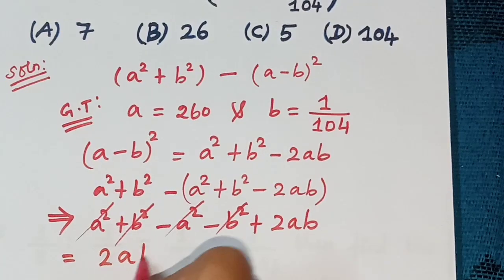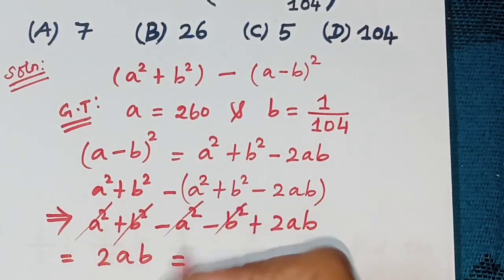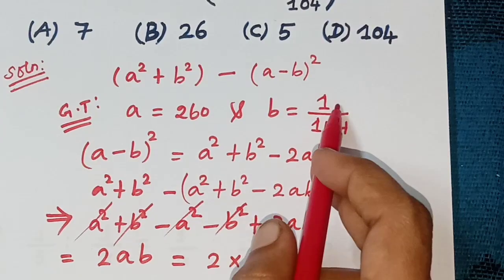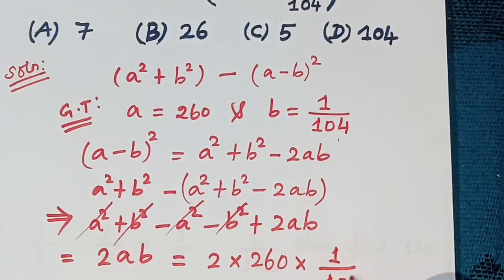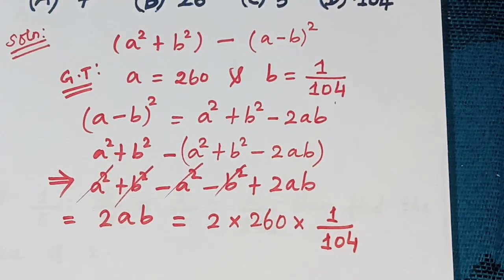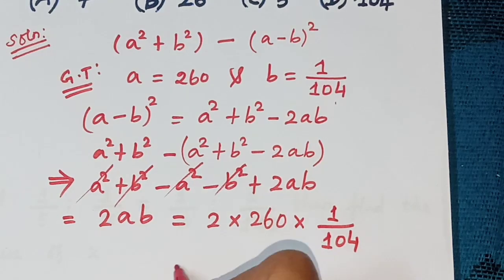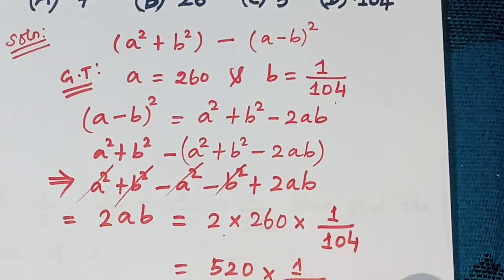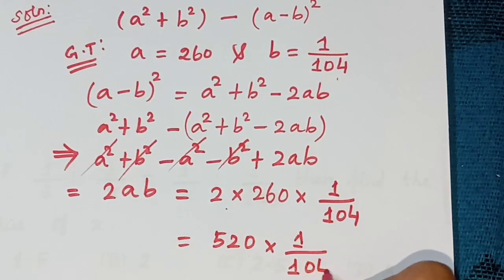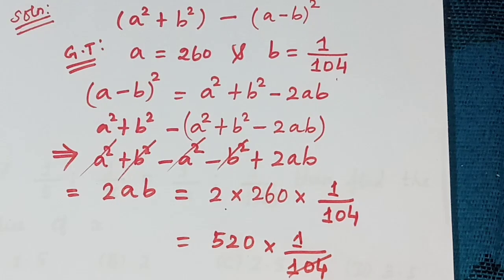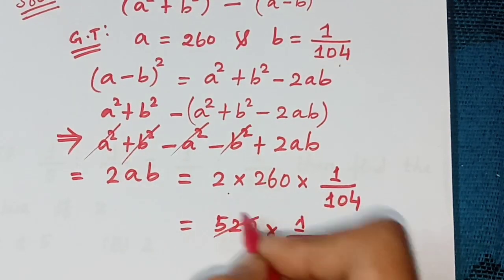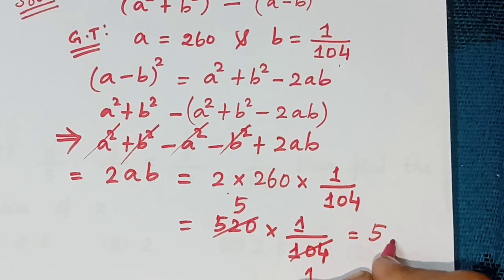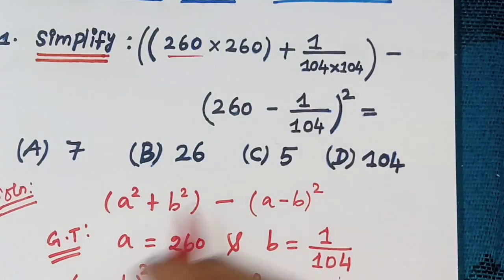So 2AB: substitute A = 260 and B = 1/104. That gives 2 × 260 × (1/104) = 520/104 = 5. The final answer is 5, which is option C.